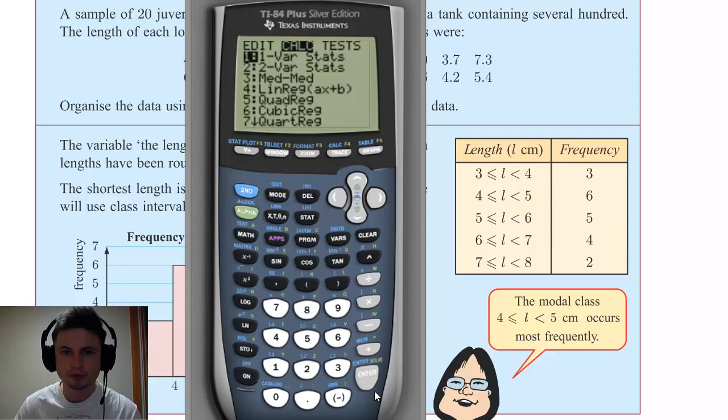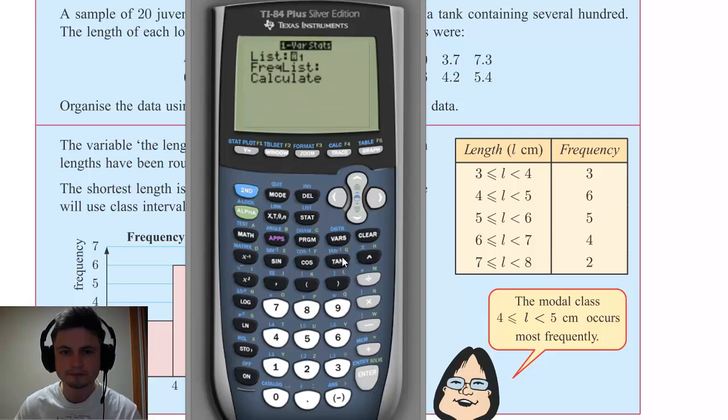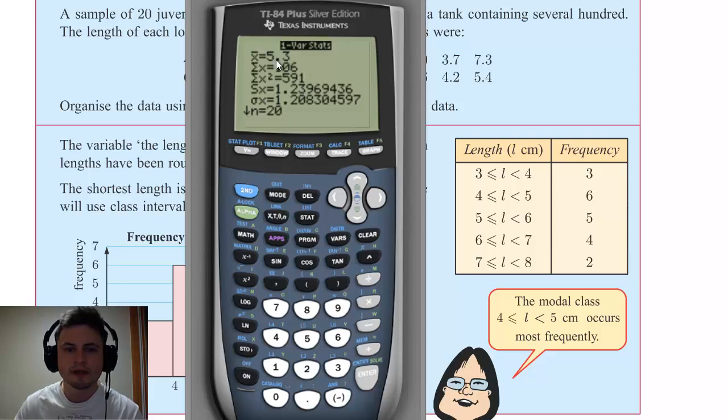Now I'm going to go back into the STAT, go back to CALC, click on the first one, and now here this is where you have to enter your frequency list. And for us it was L2, which is right here. So this is second two. And then you just have to calculate and it gives you the answers again. So your mean is here.